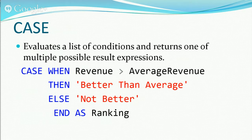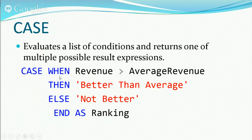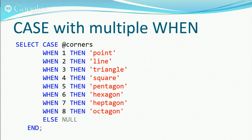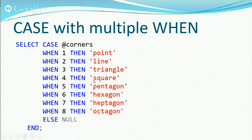For example, a CASE statement checking polygon corners: CASE corners WHEN 1 THEN 'Point' WHEN 2 THEN 'Line' WHEN 3 THEN 'Triangle' WHEN 4 THEN 'Square' and so on, with ELSE NULL for anything beyond the defined values. The difference between the two formats: in the first, you leave CASE blank and provide a full expression in each WHEN clause; in the second, you pass a variable after CASE and test it against simple values.